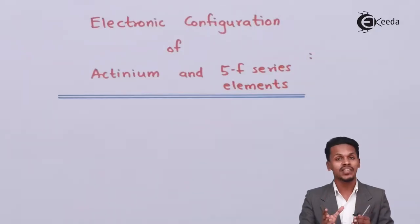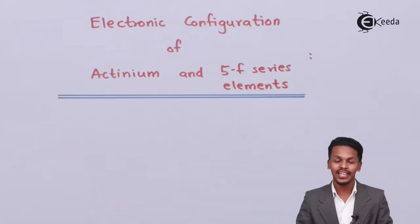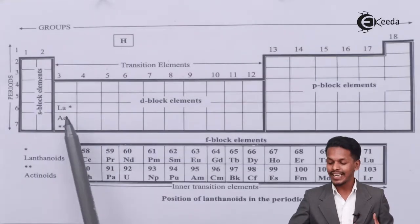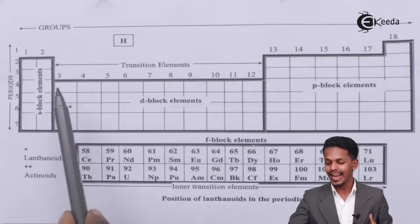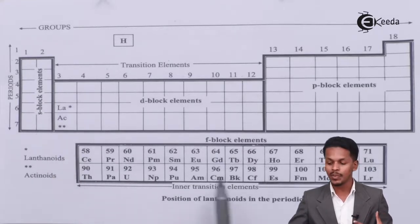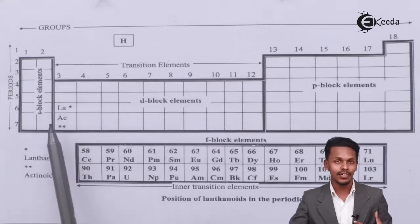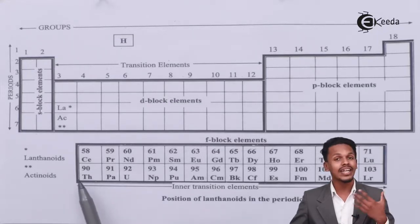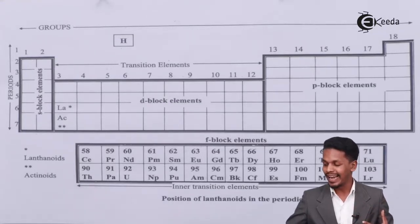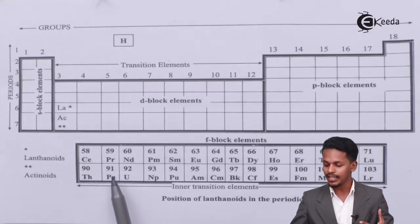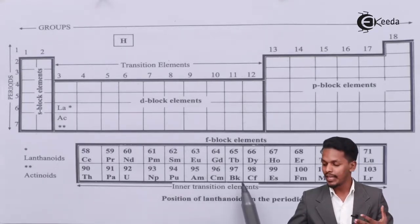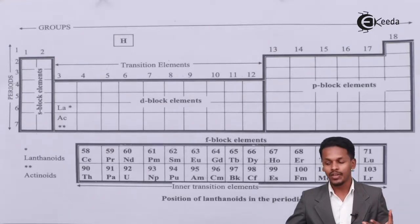Actinium is present in the seventh period and the third group. The elements present in the seventh period and third group are the actinoids, which start with thorium and end with lawrencium. The actinoids include: thorium, protactinium, uranium, neptunium, plutonium, americium, curium, berkelium, californium, einsteinium, fermium, mendelevium, nobelium, and lawrencium.